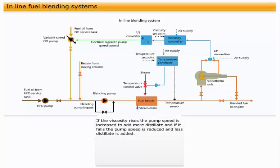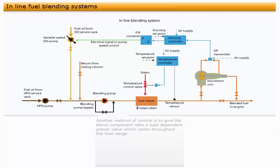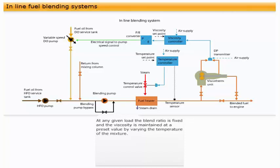If the viscosity rises, the pump speed is increased to add more distillate, and if it falls, the pump speed is reduced and less distillate is added. Another method of control is to give the blend component ratio a load-dependent preset value, which varies throughout the load range.